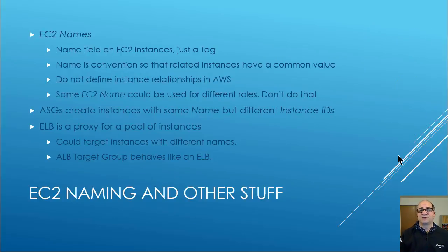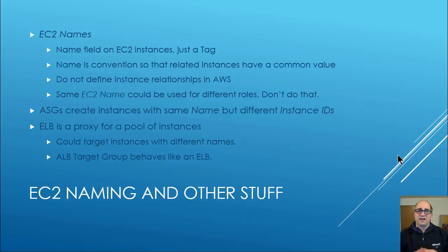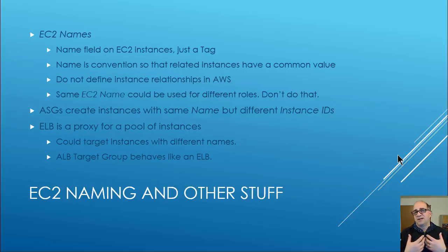On EC2 names: in the Amazon example, they don't make the name a mandatory field. If you just provision nodes, the name column in the console will be empty. A lot of places use the name field to represent all instances that make up an autoscale group. Where I work, every time an autoscale group creates an instance, we register it under a DNS name whose root matches the EC2 instance name. The name field is just a tag — it's a convention. All instances representing the same component usually have the same name, but it does not define instance relationships inside AWS. You could give completely unrelated instances the same name.